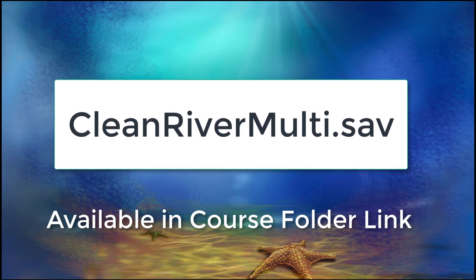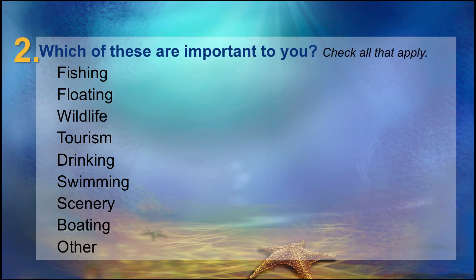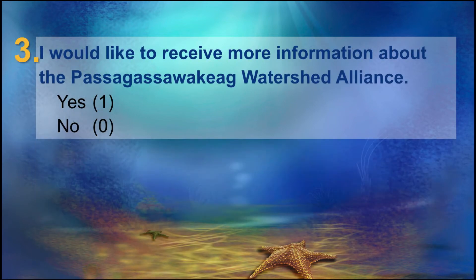We will use three questions: Why are our local waters most important to you? — looking for only one response — followed by, which of these are important to you? Check all that apply, giving people the opportunity for multiple responses. And finally, I would like to receive more information about the Pasig-Esawakig Watershed Alliance — yes or no. This will be the item that we will use later for cross-tabulation.